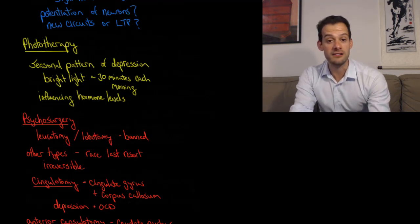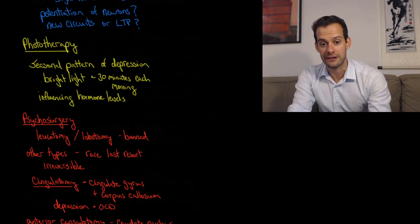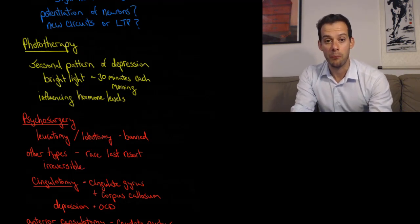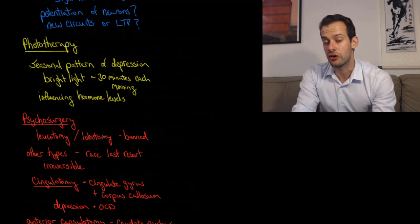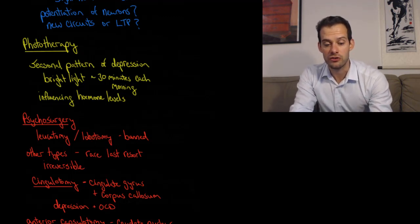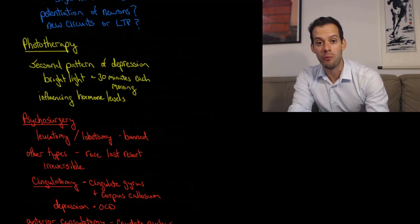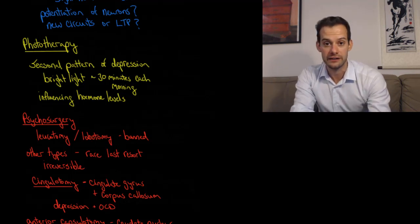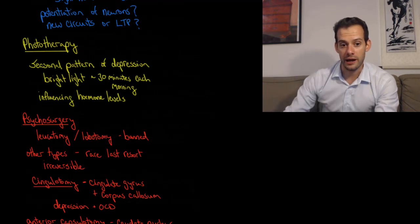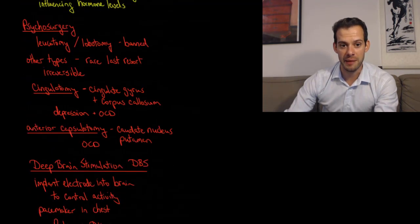The treatment is simply exposure to light. The person will get a special light box that emits bright light onto their face, and then they use it each morning for about 30 minutes or so. This fairly limited amount of exposure to bright light can help to influence their hormone levels, and this can actually help to prevent these depressive episodes that occur in the fall and winter.